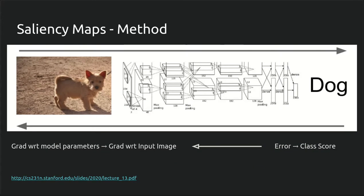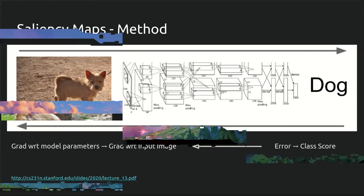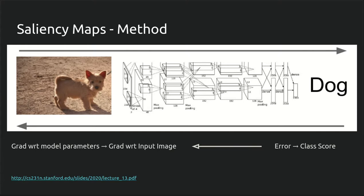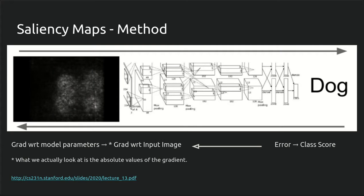The way that we make saliency maps is instead of taking a gradient with respect to the model parameters, what we end up doing is taking the gradient of the class score that we're trying to visualize with respect to the input image itself. So when we take that gradient and push it backwards through the model, what we get out the other end is a sort of activation map of the degree to which a pixel contributed to that class score.